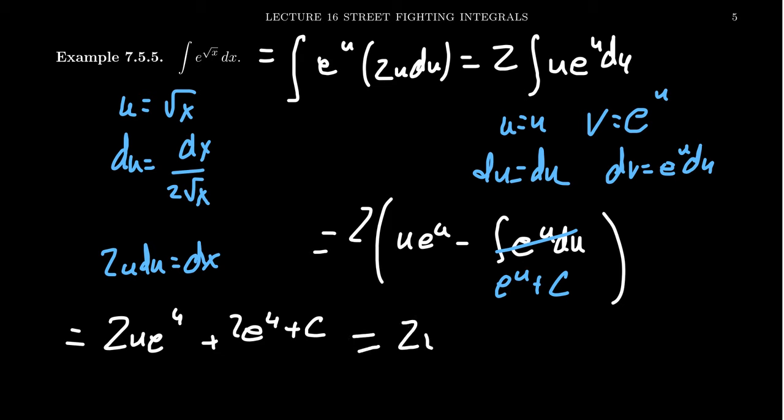we get 2 square root of x e to the square root of x plus 2 e to the square root of x plus a constant. For which you could factor that thing.